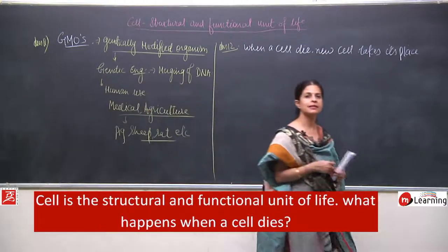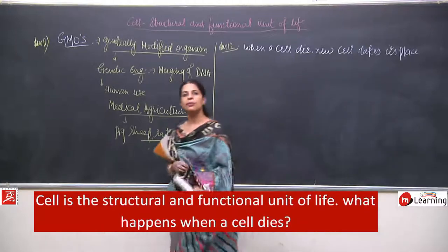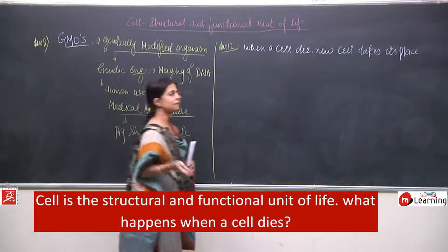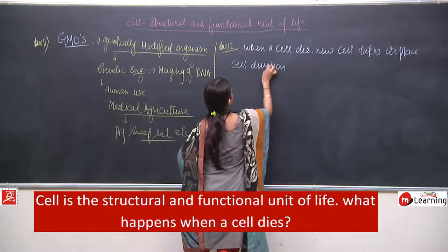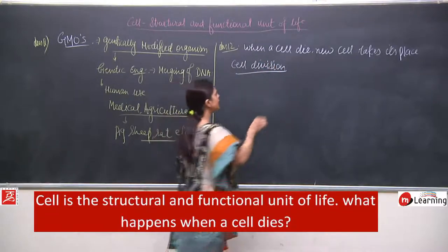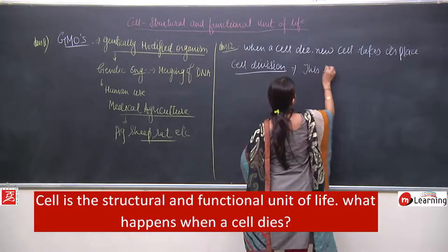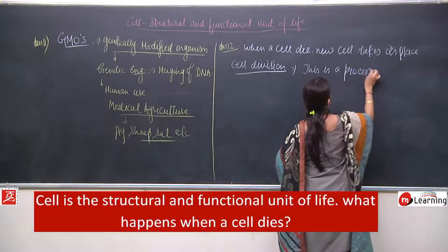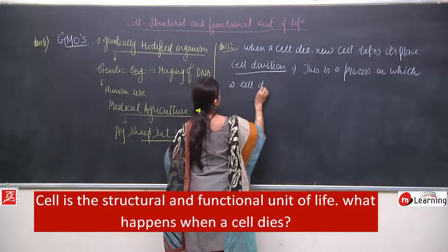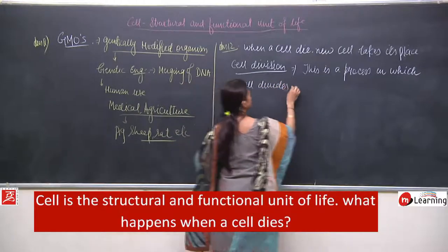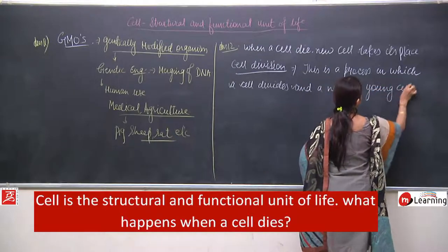It depends upon the cell — cells keep on dying and a dead cell is replaced by a new cell. That is what cell theory says: a cell arises from a pre-existing cell, meaning cells keep on dividing. Cell division is a process in which a cell divides and a new young cell is formed.